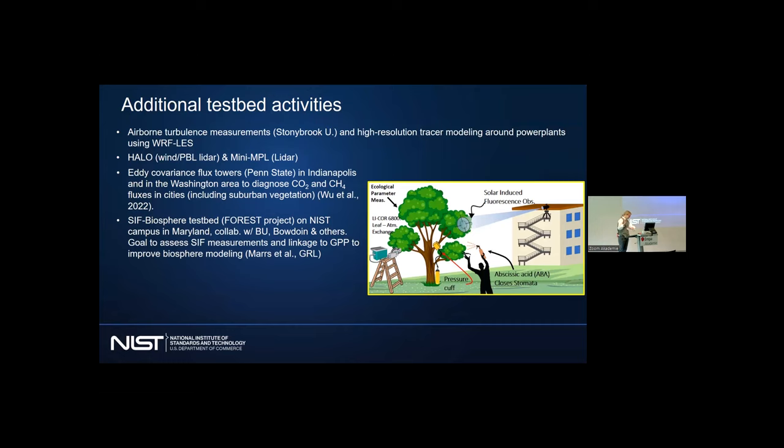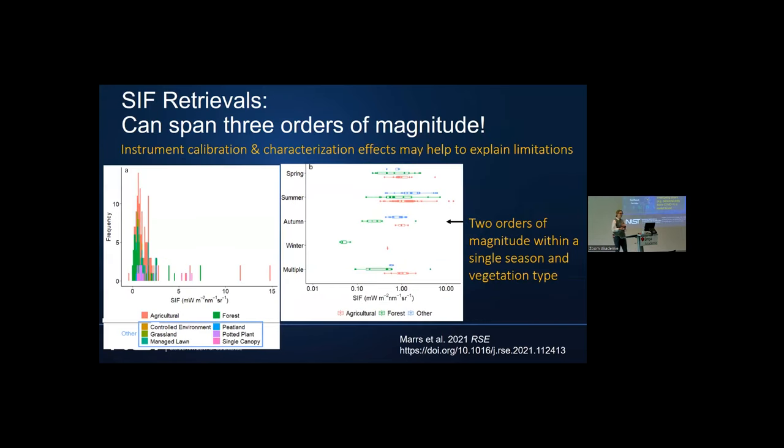There are other additional testbed activities going on. I'm running out of time so I'll mention this quickly. There's a lot going on in the northeast corridor, including looking at meteorological data. We have eddy covariance towers now being placed in the Washington DC area, thanks to Ken Davis, to help characterize suburban vegetation. We have a SIF biosphere testbed at the NIST site with allometric measurements and a handheld SIF gun. We're doing this in collaboration with Lucy Hutyra from Boston University, Bowdoin College and others. The goal is to assess SIF measurements and linkage to GPP to improve biospheric modeling.